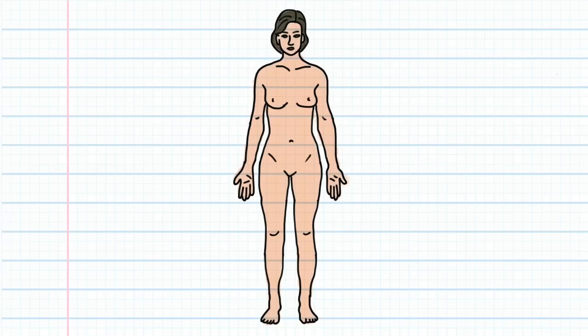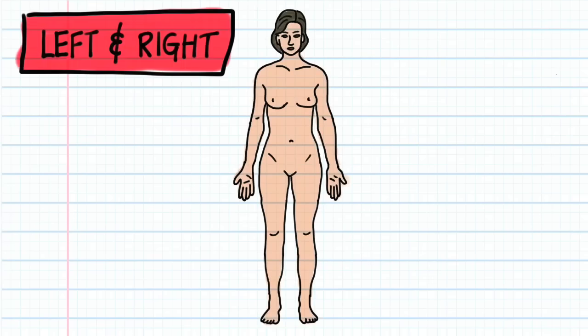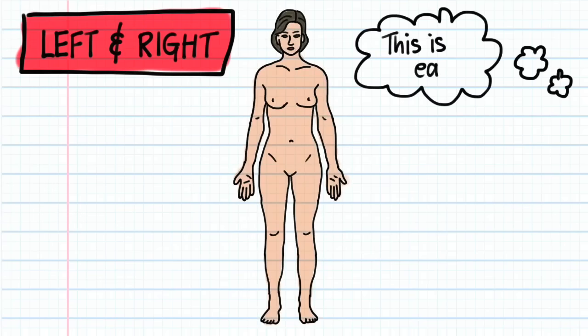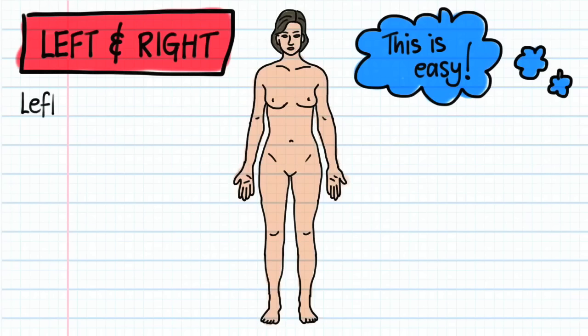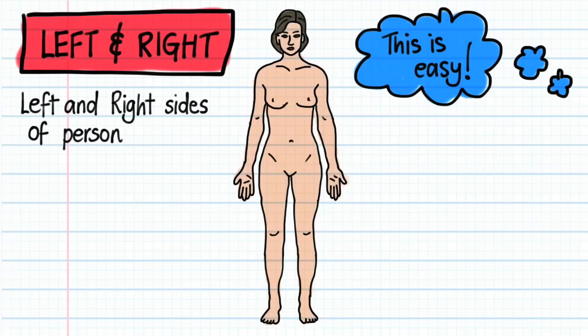The first terms we're going to define are left and right. I know what some of you are thinking — didn't we learn this in preschool? Well, even though you might think that the definitions of left and right are straightforward, many students actually use these terms incorrectly. When we use the terms left and right, we're referring to the left and right sides of the person standing in the anatomical position, which in this case is the woman in this drawing.